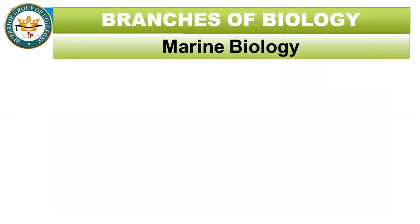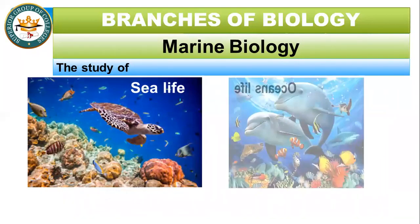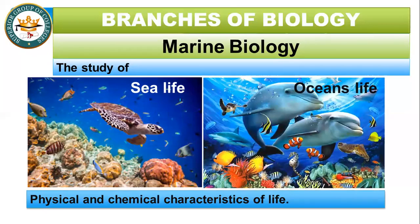The next branch is marine biology. The first word is important. The study of life in oceans and seas — that is known as marine biology. Once again, in marine biology, there are physical and chemical characteristics of life because all the organisms associated with marine biology are found in ocean and sea water.